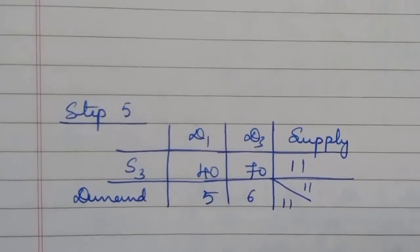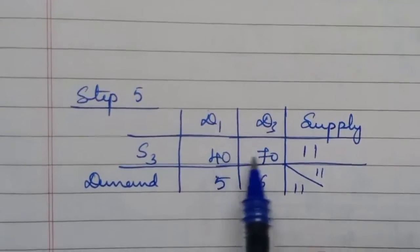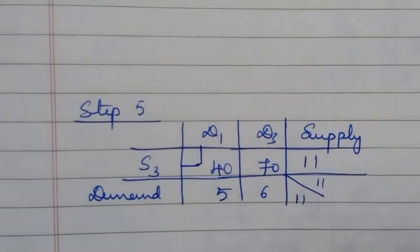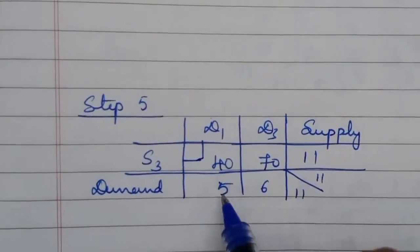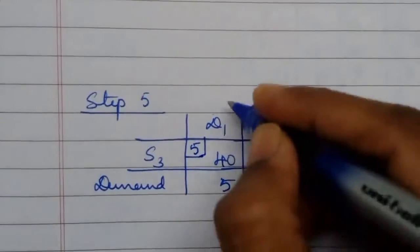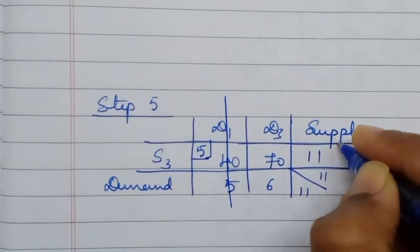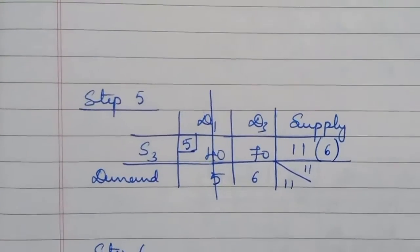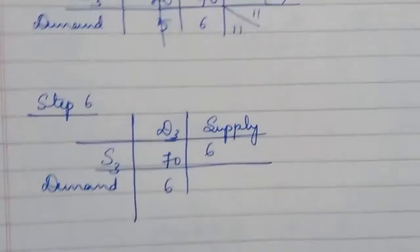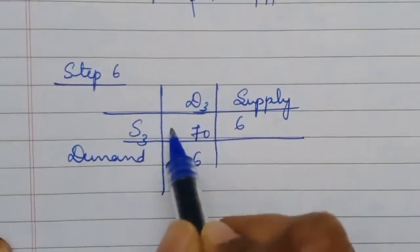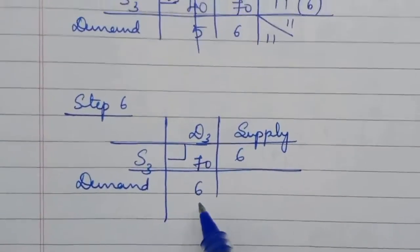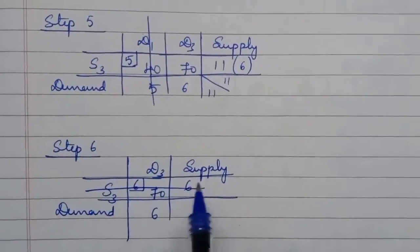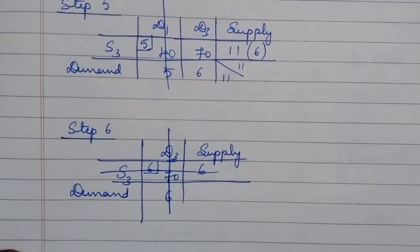In step 5, we have 2 cells remaining. Cost 40 is the least compared to 70, so we allocate there. Demand is less than supply, so this destination is satisfied, leaving 6 more products. Then supply and demand are equal and the final allocation is made, completing the solution.